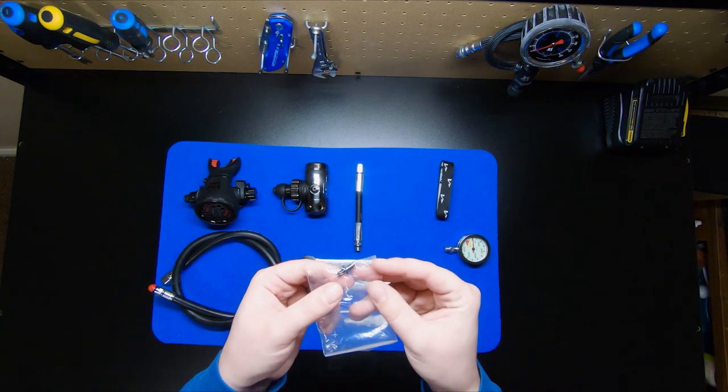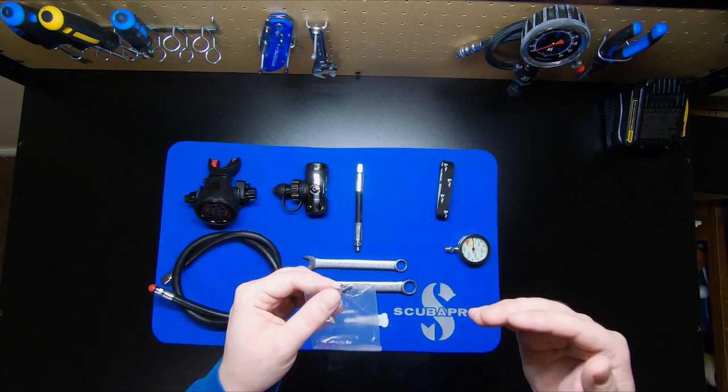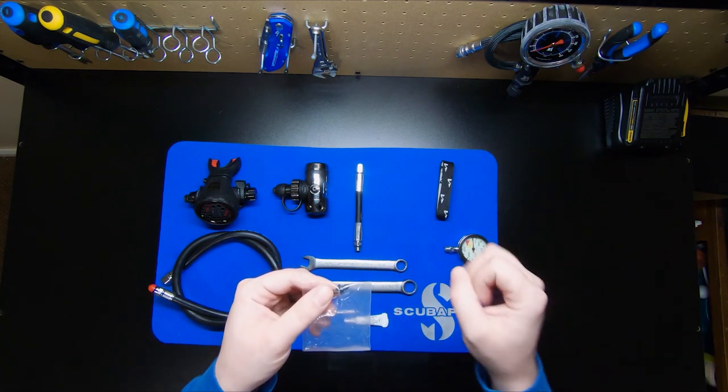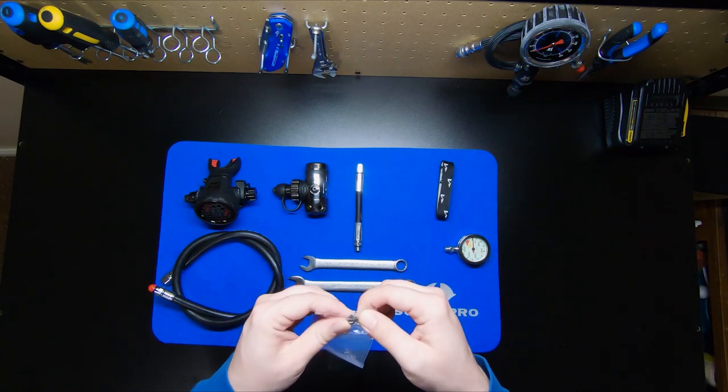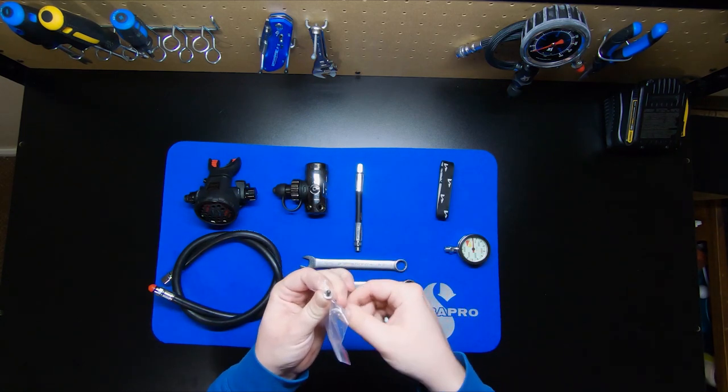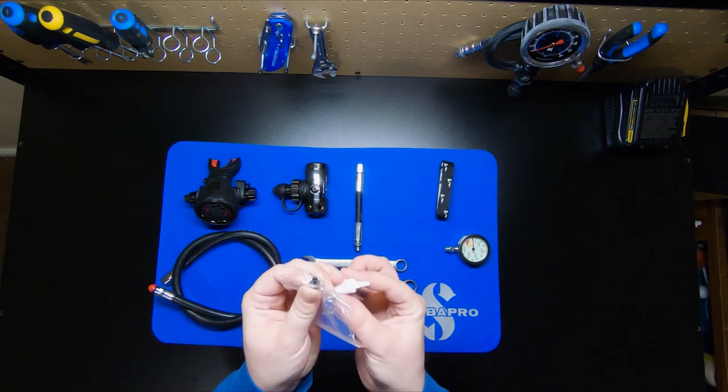If you are using this regulator with high levels of oxygen, you want to try and keep this as clean as possible. So when I grease this up, especially if I know it's clean from factory, what I'm going to do is I usually will just pop it through the bag like this. And then I'm going to open up my oxygen compatible grease and add just a little bit of grease to the O-ring just like that.